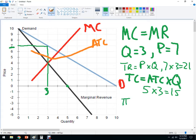And then profit is going to be total revenue minus total cost. So that's 21 minus 15, and so the total profit is six under this monopoly.